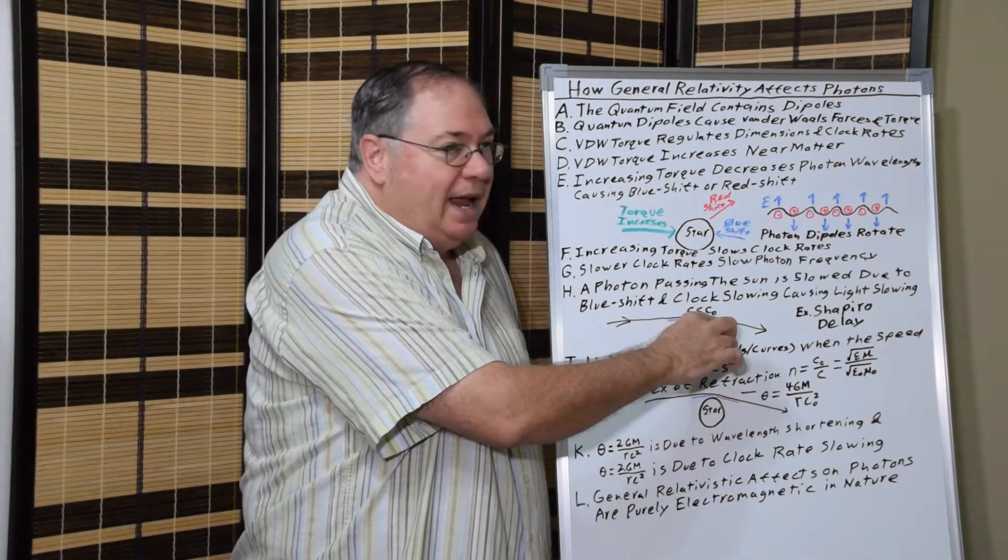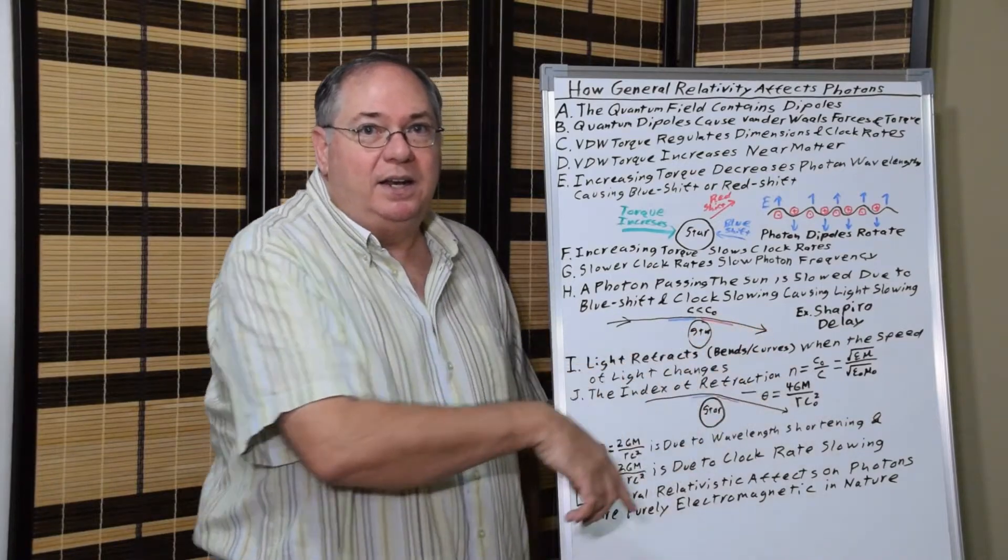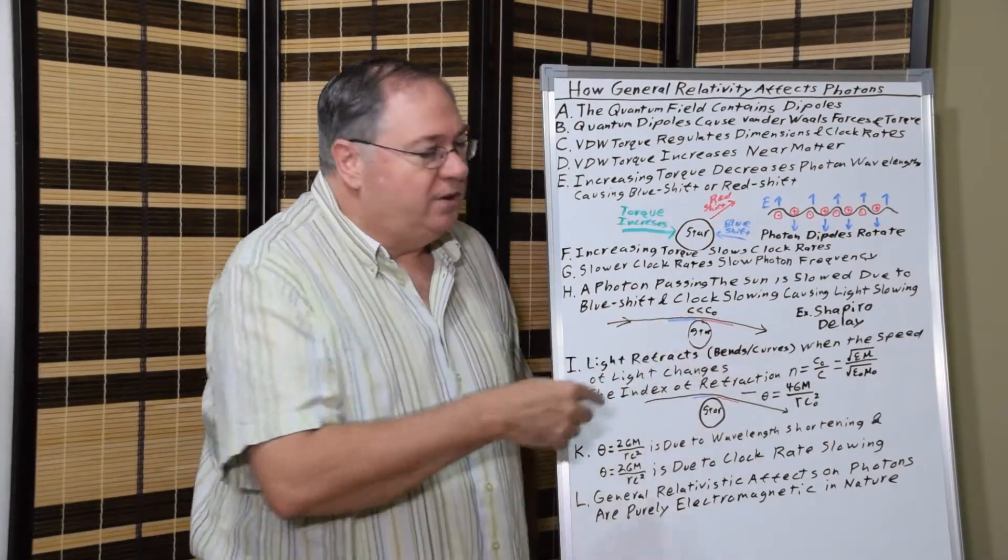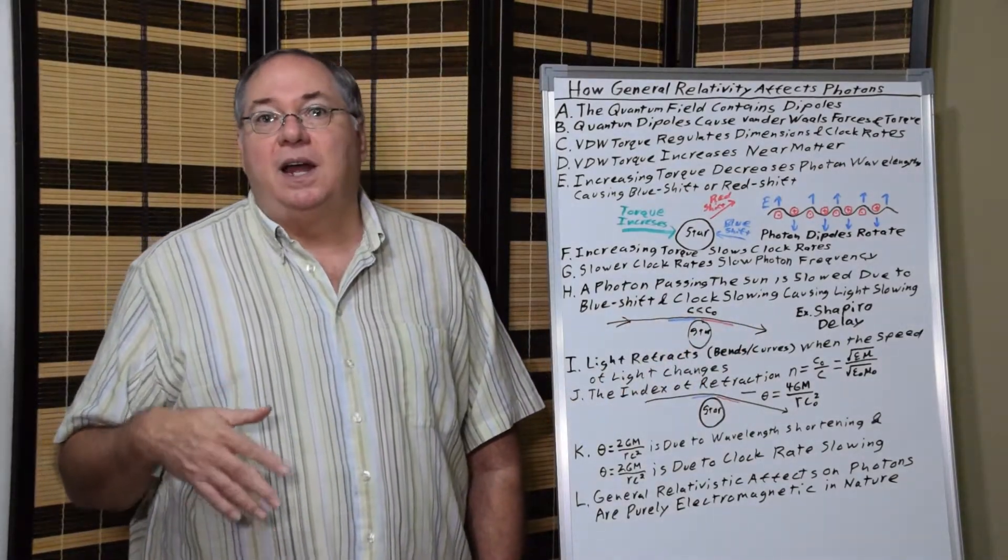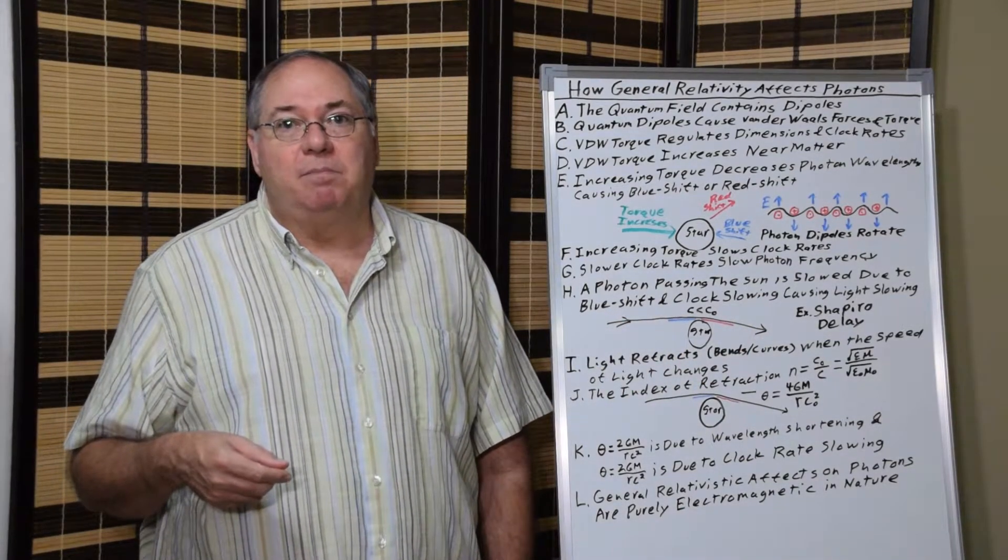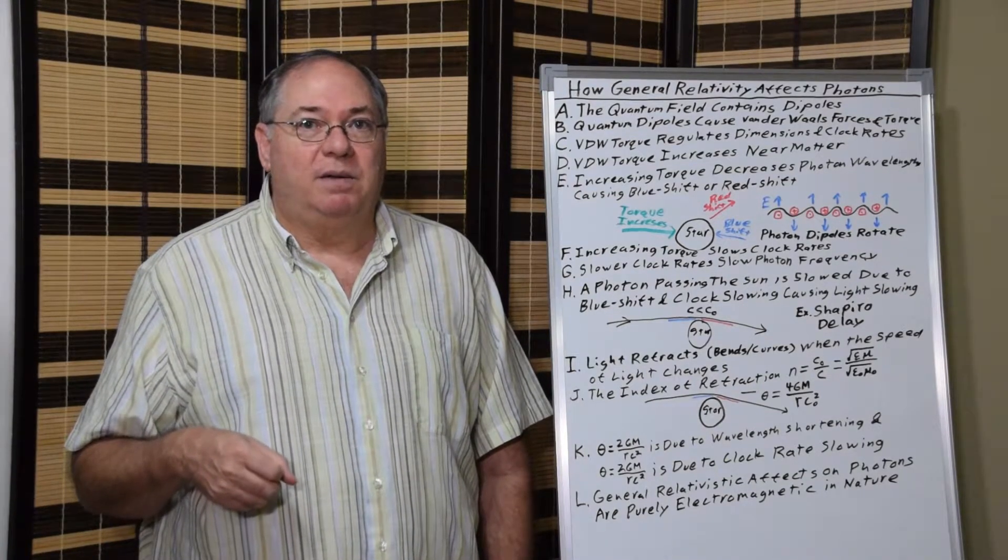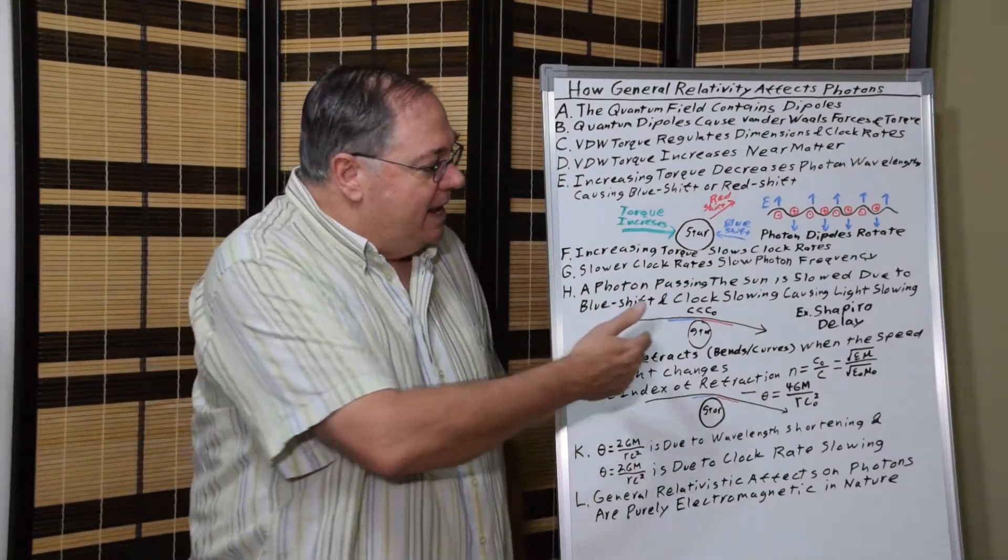So you get both blueshift as a photon approaches the sun, which is the changing of the wavelength. You also get the clock rate slowing, the changing of the slowing of the frequency. And then as it goes past the sun, you get redshifting again.